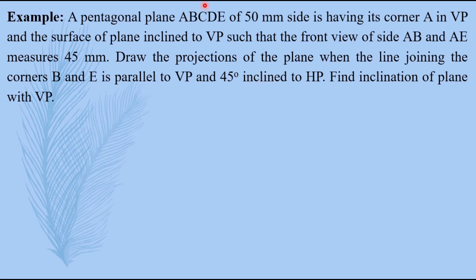A pentagonal plane ABCDE of 50mm side is having its corner A in VP, and the surface of the plane is inclined to VP such that the front view of sides AB and AE measures 45mm. Draw the projections of the plane when the line joining corners B and E is parallel to VP and 45 degrees inclined to HP. Find the inclination of the plane with VP.